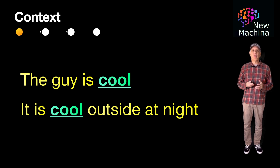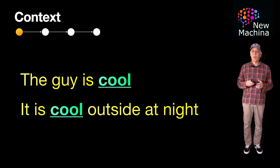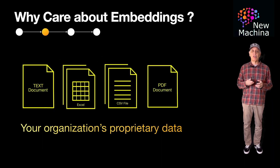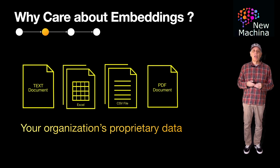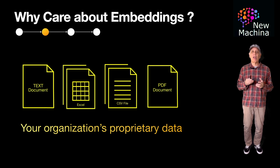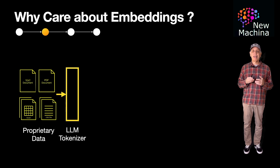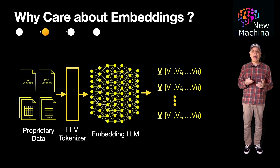So why do system builders care about LLM embeddings? Why should you care? When you build a system with an LLM, you're likely to bring in proprietary data from your organization and you will want to augment your third-party LLM with this data. So how exactly do you integrate your proprietary data into an LLM-driven system? One approach is to take your proprietary text documents and systematically create embeddings for each of them.